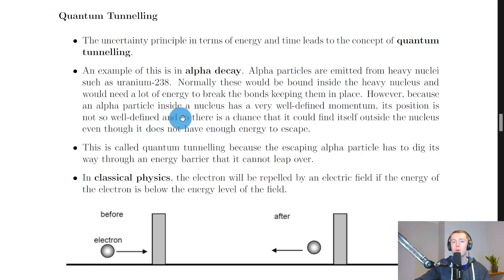However, because an alpha particle inside a nucleus has a very well-defined momentum, its position is not so well-defined and so there is a chance that it could find itself outside the nucleus even though it does not have enough energy to escape.